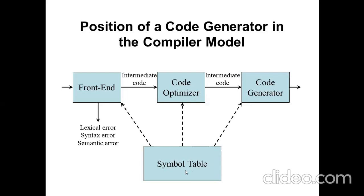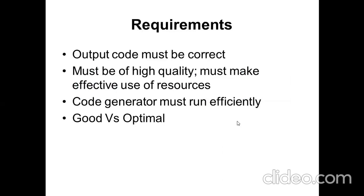The symbol table is connected with all the phases of the compiler. To produce good optimized target code, your output code must be correct, must be of high quality, and should run efficiently.